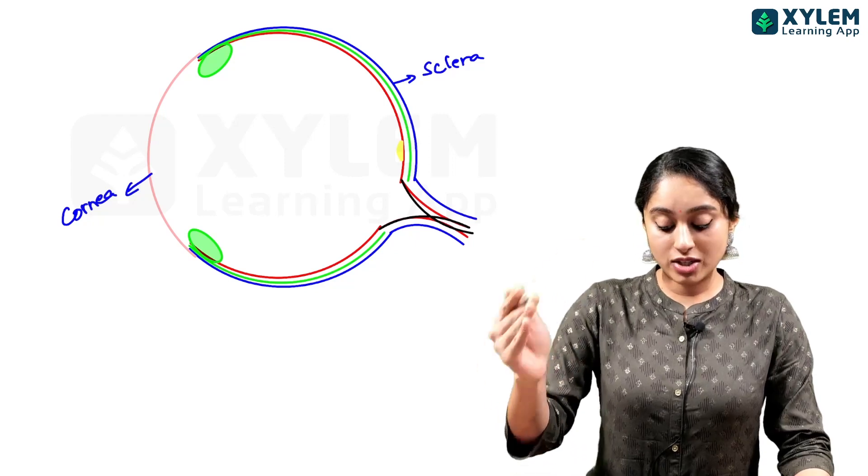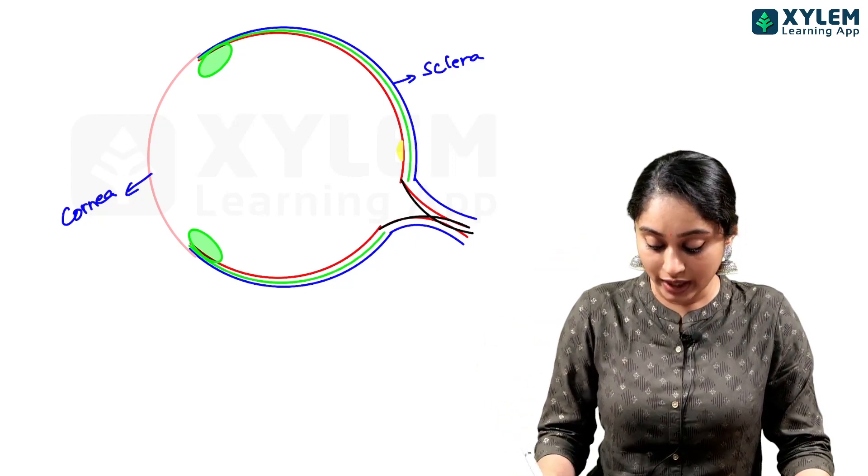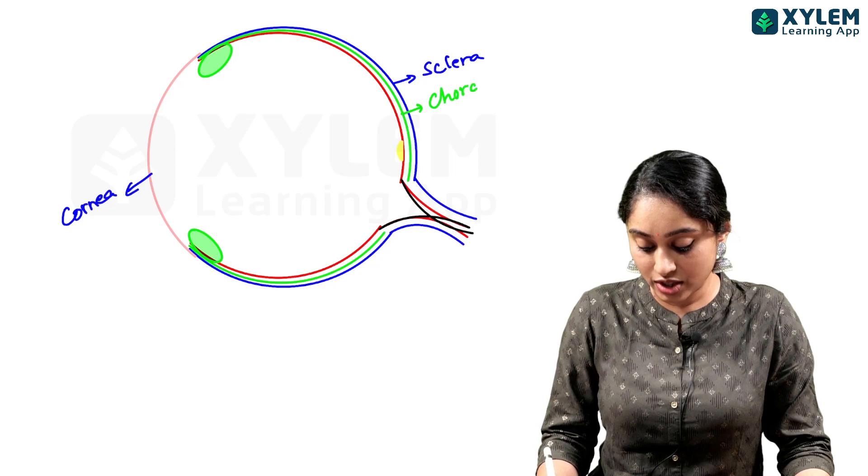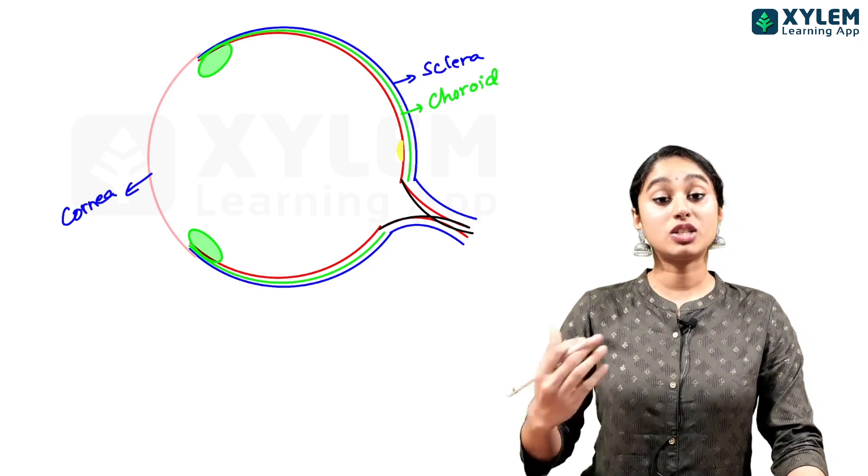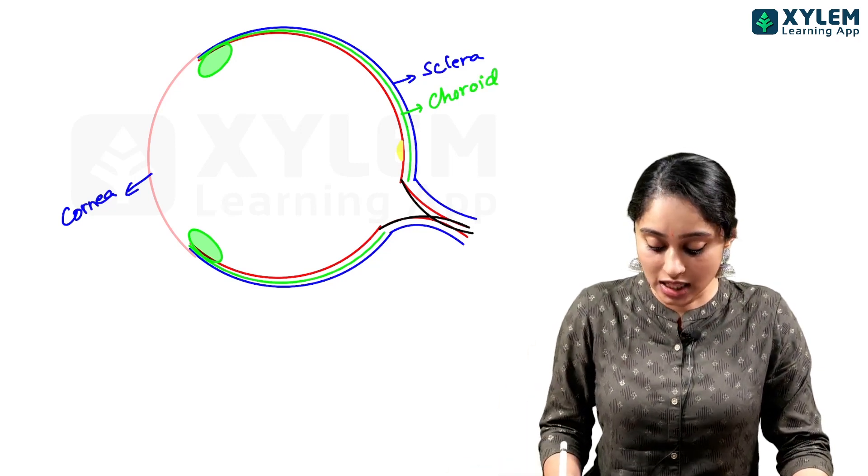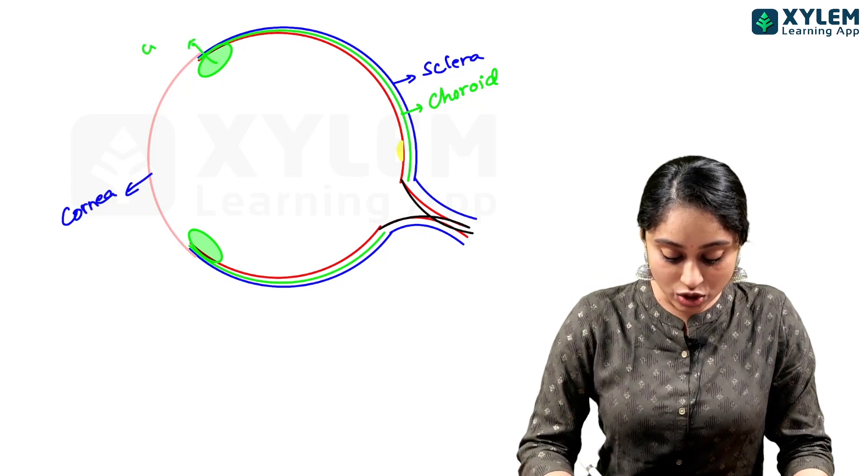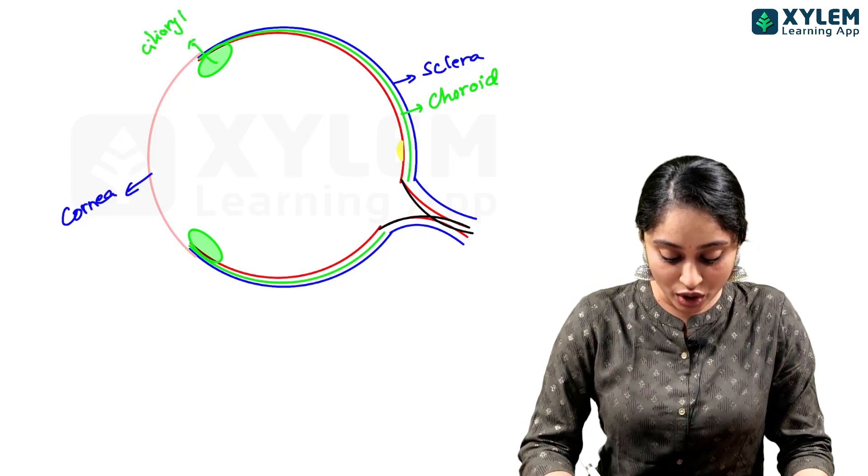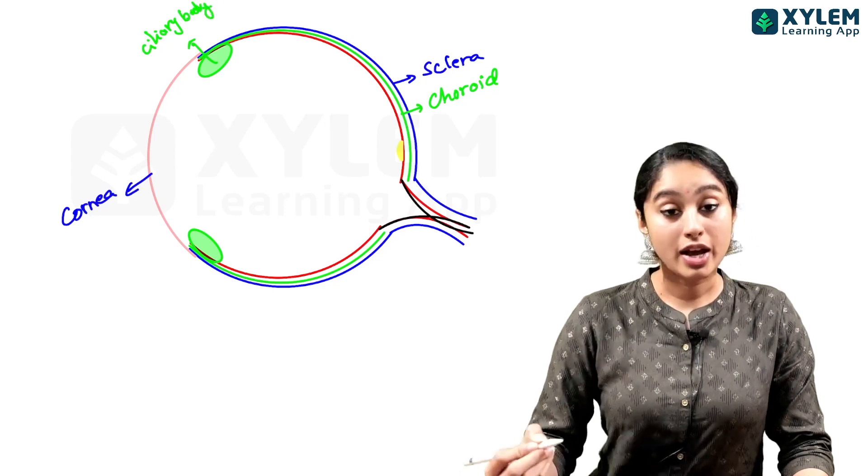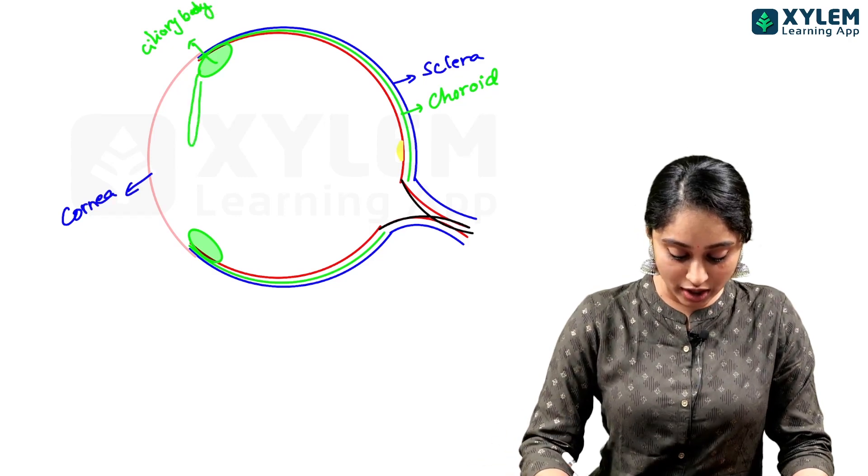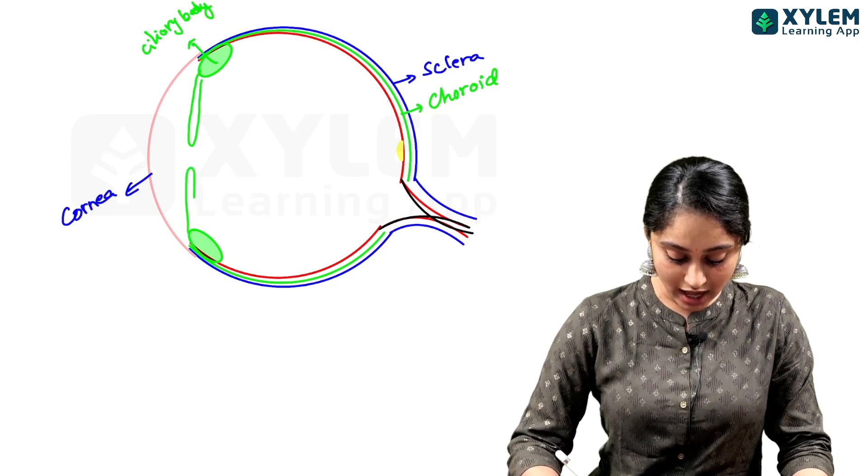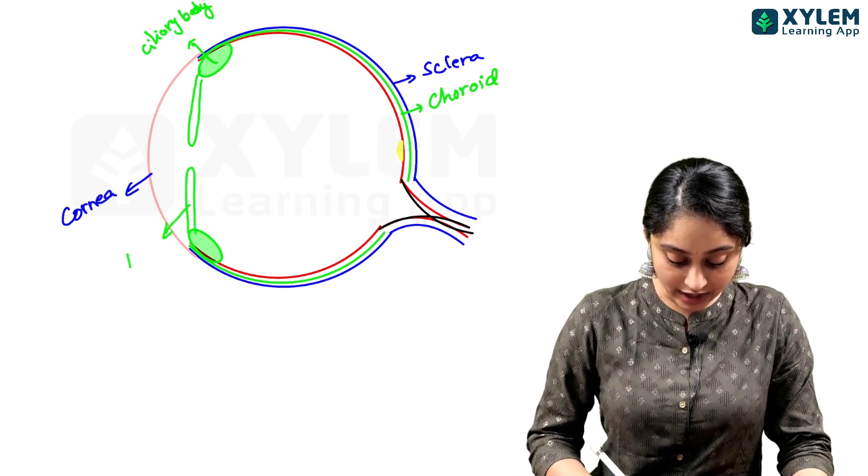From the outermost region, the next layer is the choroid region. In the choroid region, there is a rich supply of blood. And in the choroid region, the front extends to a ciliary body. The ciliary body in front continues as the iris.